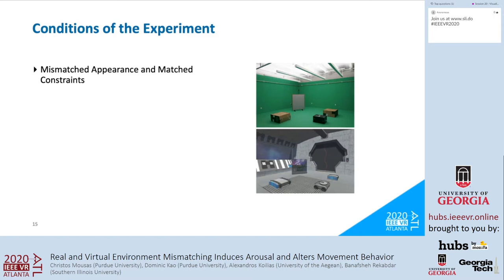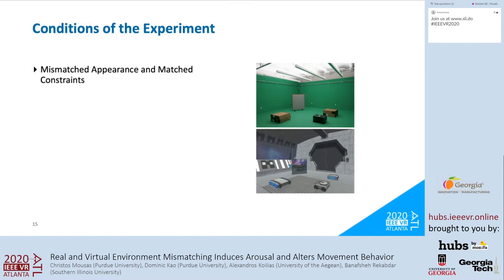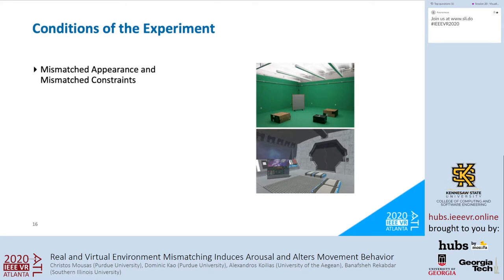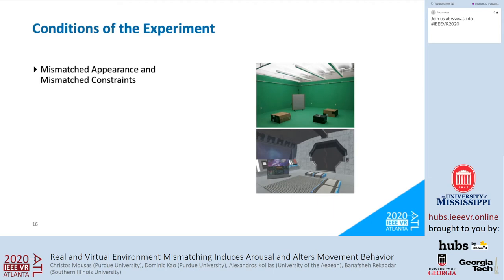The fourth condition is 'mismatched appearance and matched constraints': the imaginary environment is used and obstacles in the real environment are substituted with virtual objects in the virtual environment of matching size, with participants again aware of real obstacles. The fifth condition is 'mismatched appearance and mismatched constraints': both the appearance and spatial constraints are mismatched, with obstacles placed in the real environment at positions that do not match obstacle positions in the virtual environment. Participants were aware of the real obstacle positions before the experiment began.